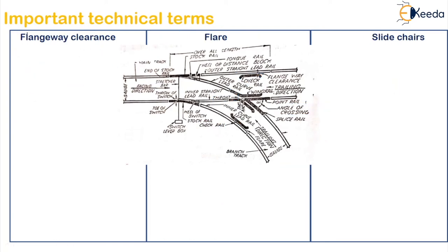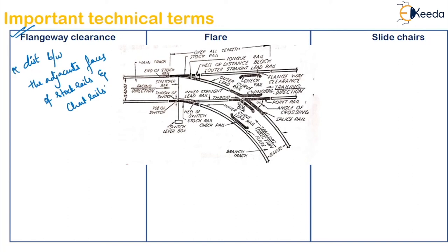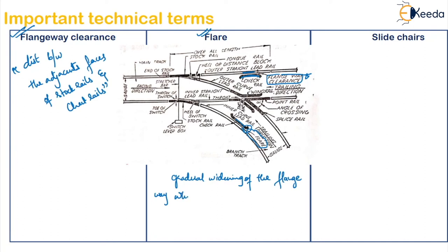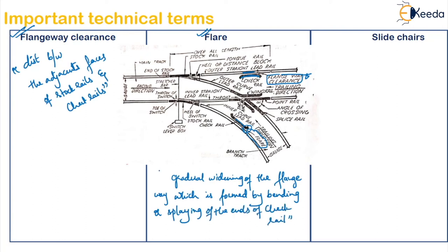Next is flangeway clearance — the distance between the adjacent faces of the stock rail and check rail. Then the flare: the gradual widening of the flangeway formed by bending or cutting of the ends of the check rail is the flare. This is provided mainly for smooth crossing.